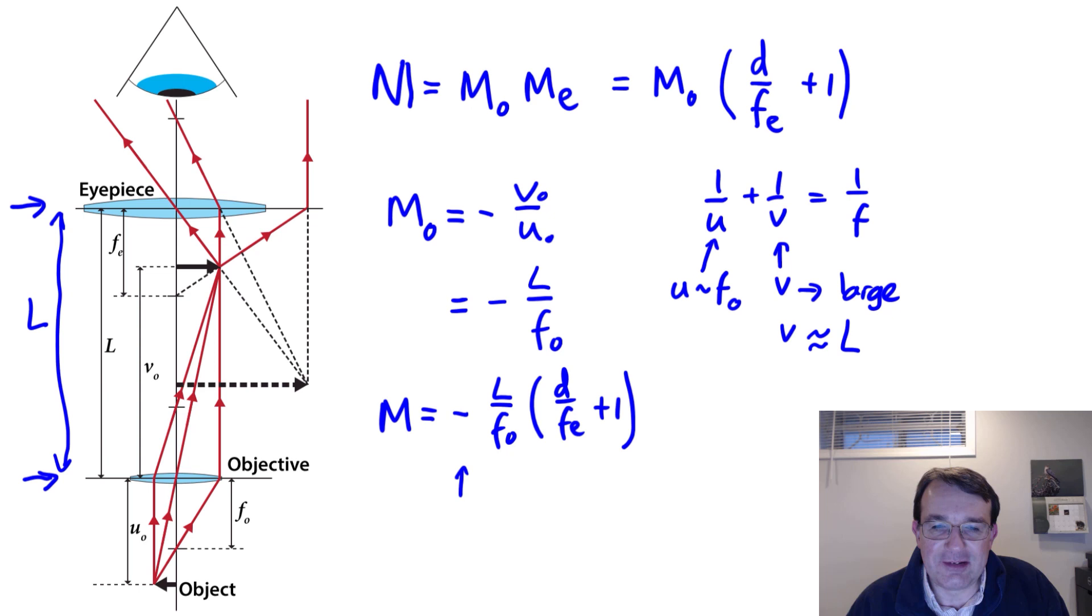Overall we have a final image that's both virtual and inverted. This is another example where a multiple lens system is not limited by the usual rules that apply to single lens systems. With a single lens if it's a virtual image it's the right way up. Here because we've got two lenses we have a virtual image that's inverted. You can see how we can get a magnification from both lenses, and that's how we end up with a net magnification factor that's a lot higher than what either lens is capable of.